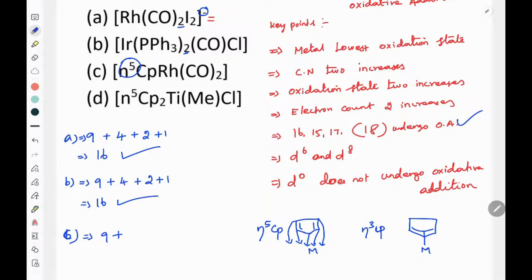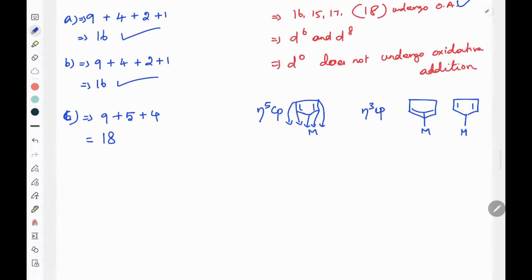With 3 carbons bound to the metal, eta-3 gives 3 electrons. Then we have one CO giving 2 electrons. So 9 plus 5 plus 3 plus 2 equals... wait, let me recalculate. 5 for eta-5, then 2 times 2 for two CO ligands gives 4. So it's 18 electrons.